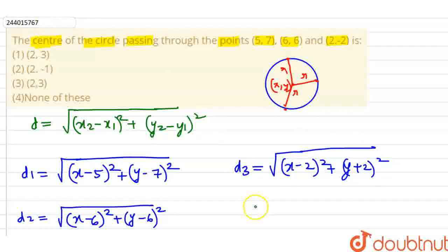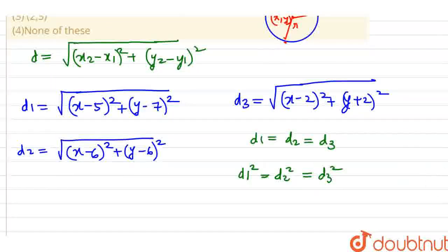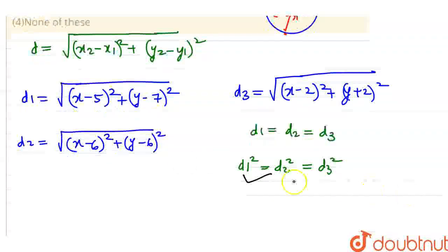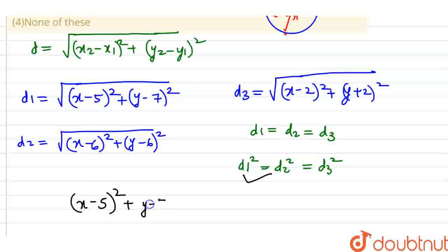Now we know that distance d1 equals d2 equals d3. If we square them, then d1 square equals d2 square equals d3 square. We will first consider d1 square and d2 square and equate them. So x minus 5 square plus y minus 7 whole square equals x minus 6 whole square plus y minus 6 whole square.